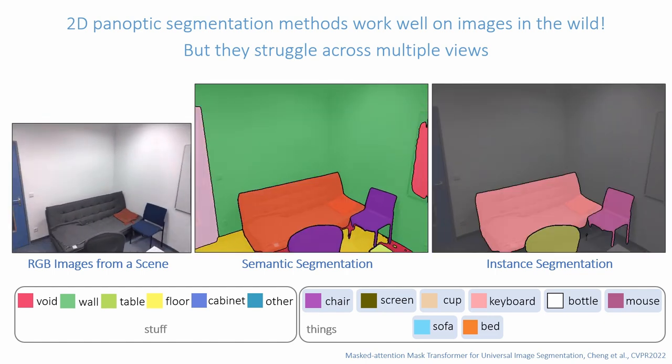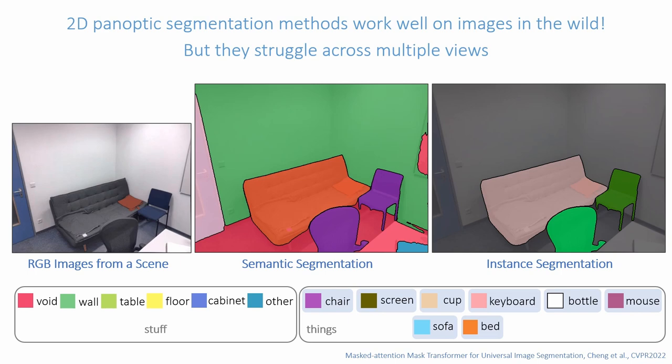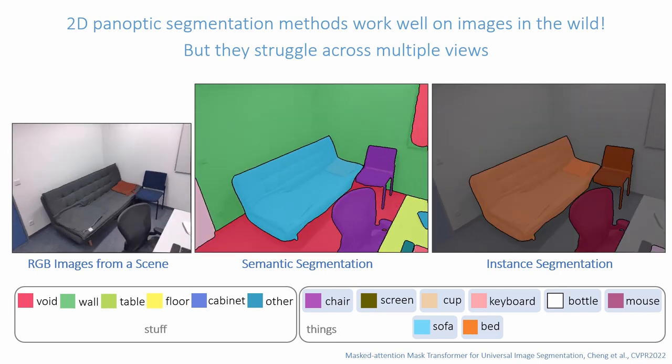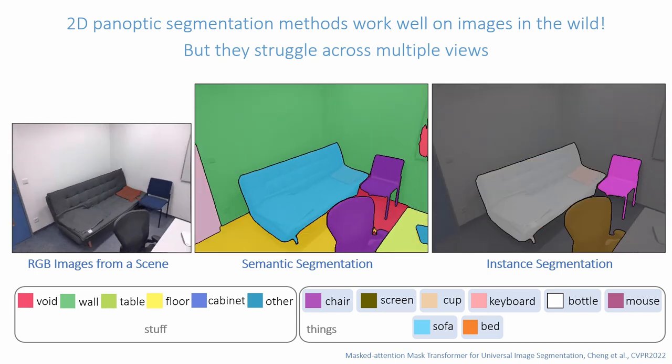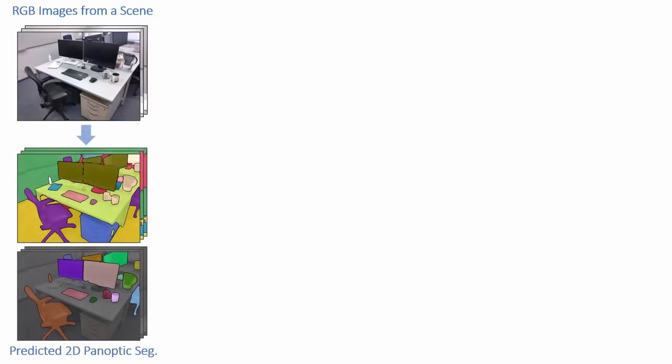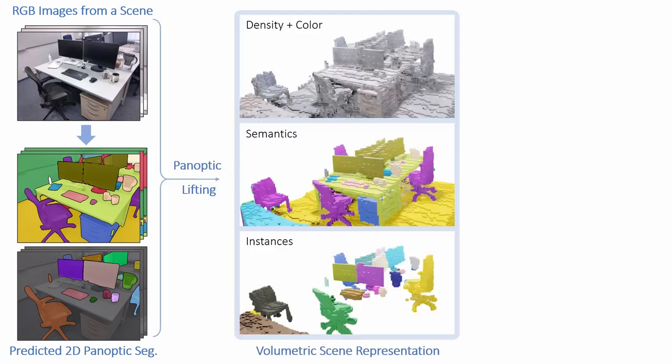Furthermore, the instance labels are not valid across views. Our method, Panoptic Lifting, tackles this problem by directly lifting 2D machine-generated labels to a 3D representation.